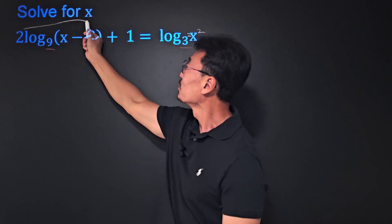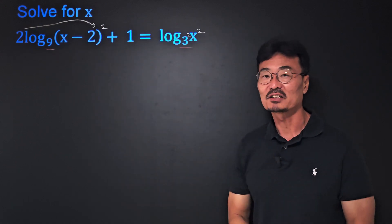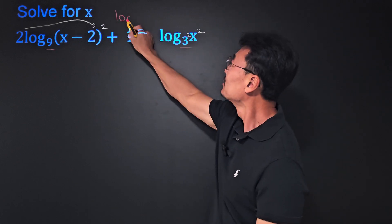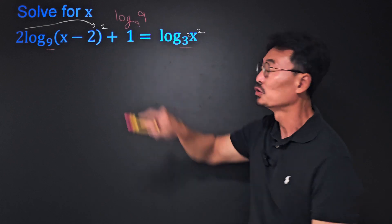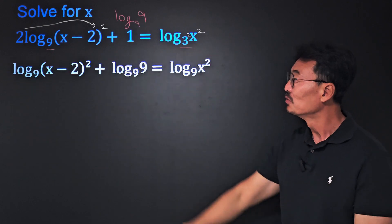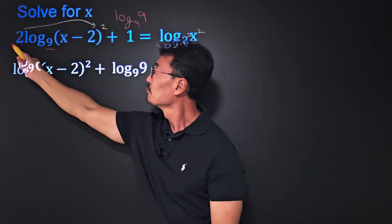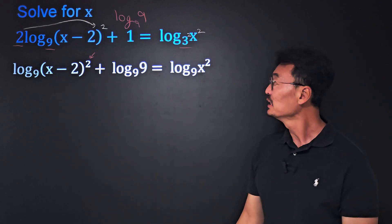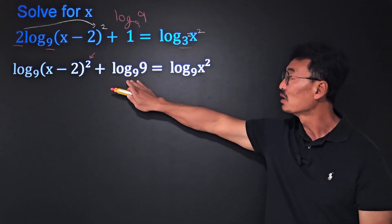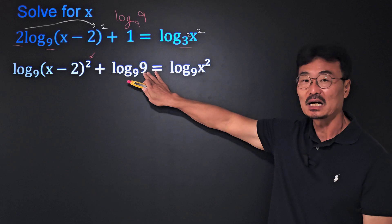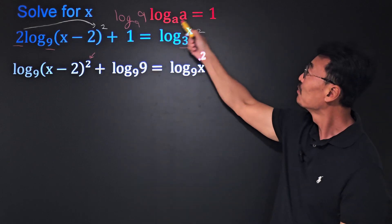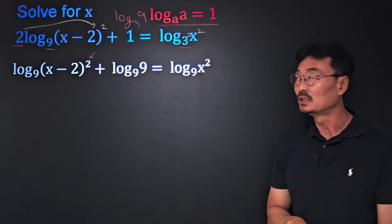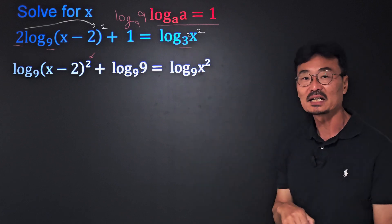Also, that 2, meaning the coefficient, we want to go ahead and put it here as the exponent, and that 1 we want to go ahead and rewrite it as log of base 9 argument 9. So there you have it folks, I took that 2 the coefficient and placed it here as the exponent of the argument, and I changed that 1 into log of base 9, 9. And again, I'm using the formula that says that log of base a argument a always equals 1.